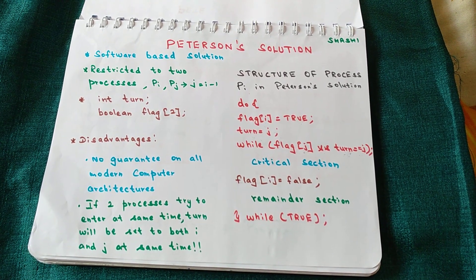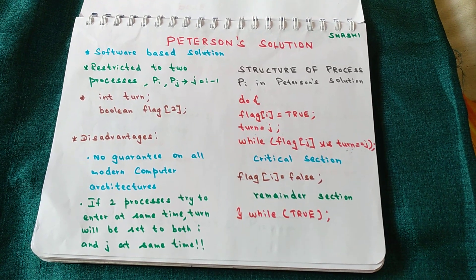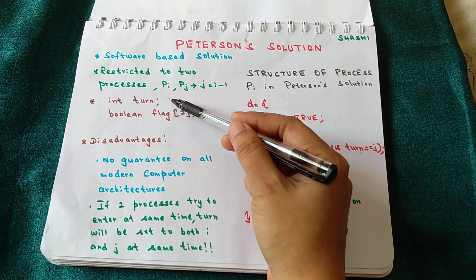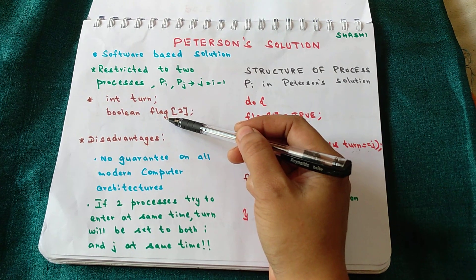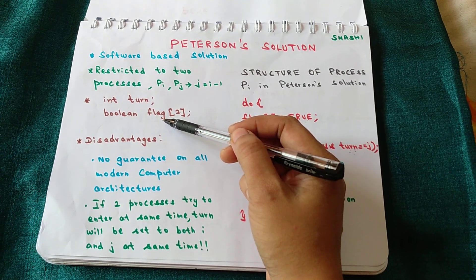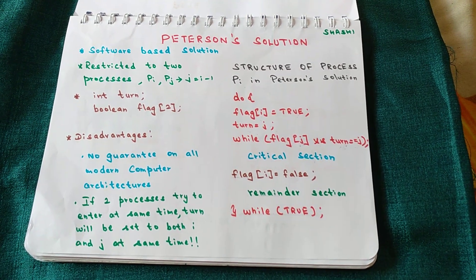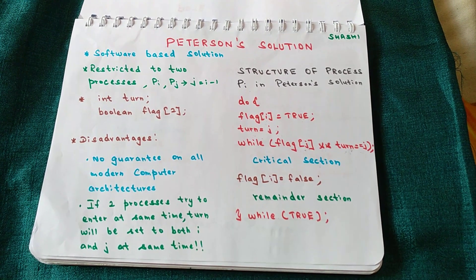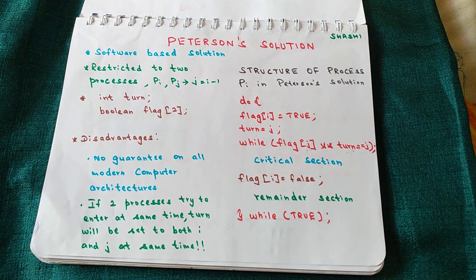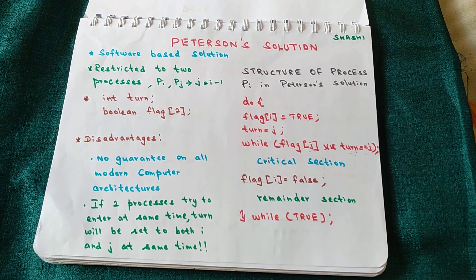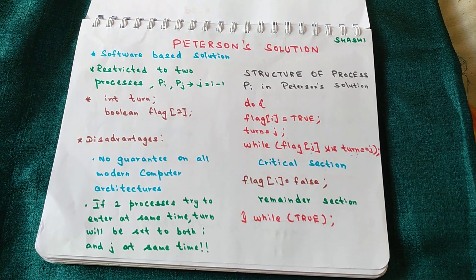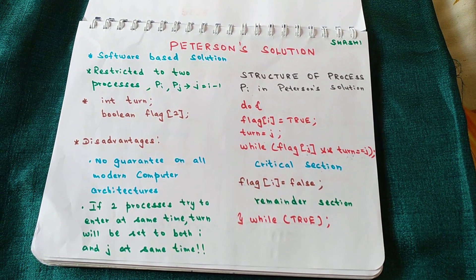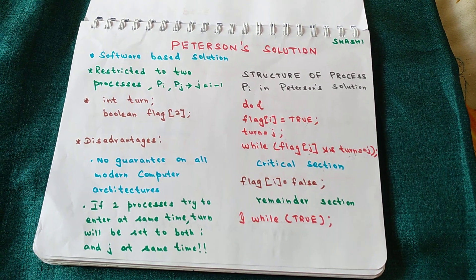Peterson's solution is a two-process solution and there are two data structures shared between the two processes. The first is the `turn` variable — an integer variable used to indicate whose turn it is to enter the critical section. The second is a boolean array called `flag`, which is used to indicate which process is ready or interested to enter the critical section.